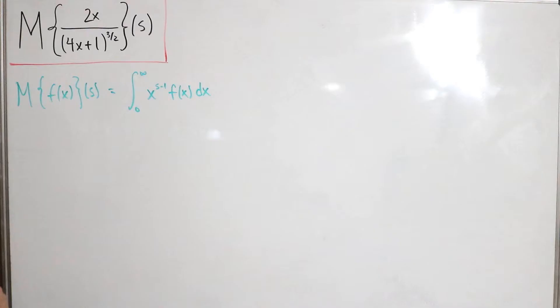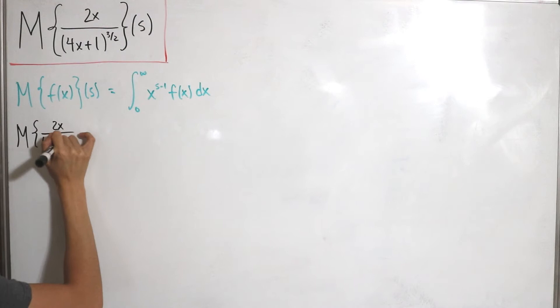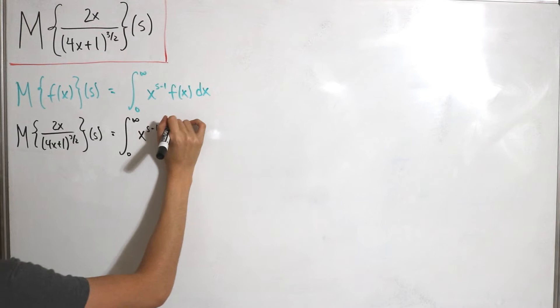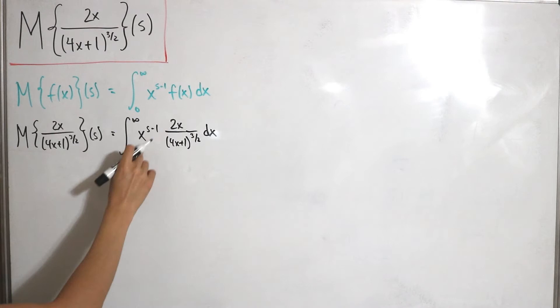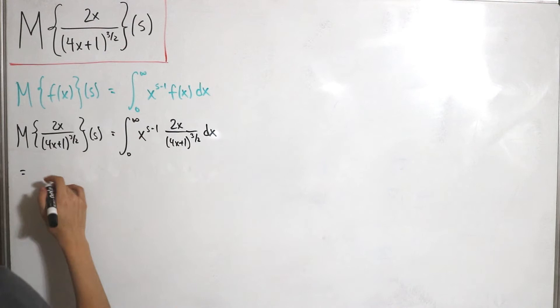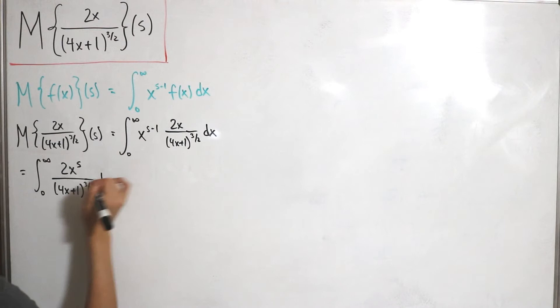Let's jump right in. For the function, the Mellin transform of 2x divided by (4x + 1) to the power 3/2, with input s, putting this into the integral gives us the integral from zero to infinity of x to the power (s minus 1) times that same function, divided by (4x + 1) to the power 3/2, dx. We can manipulate this by bringing x to the negative 1 from the numerator, so x cancels, leaving x to the power s. The integral becomes: from zero to infinity of 2 times x to the power s divided by (4x + 1) to the power 3/2, dx.